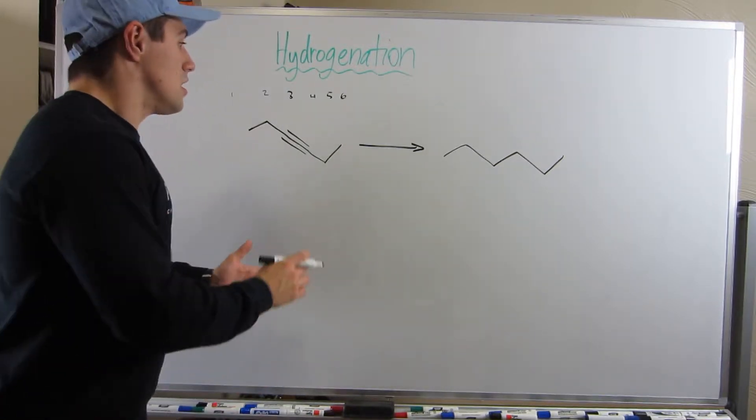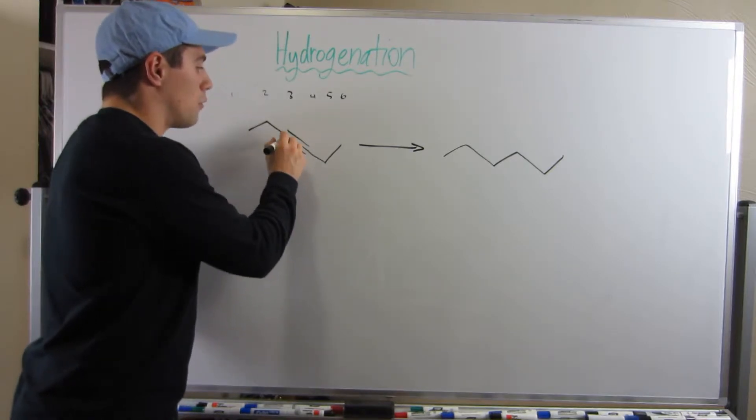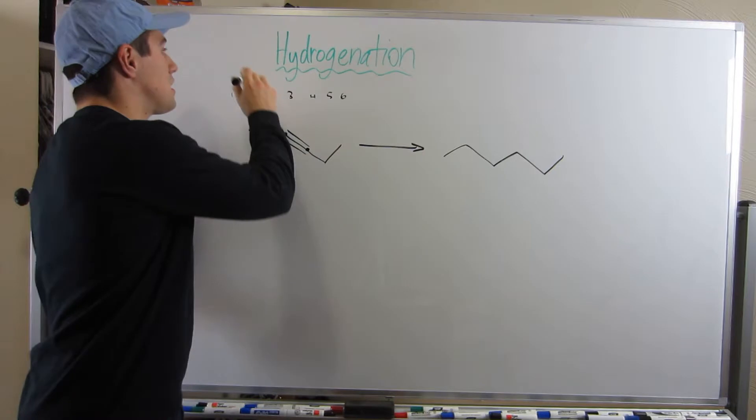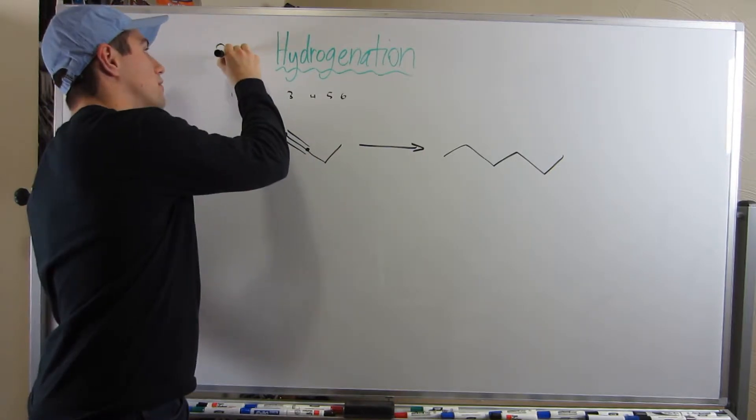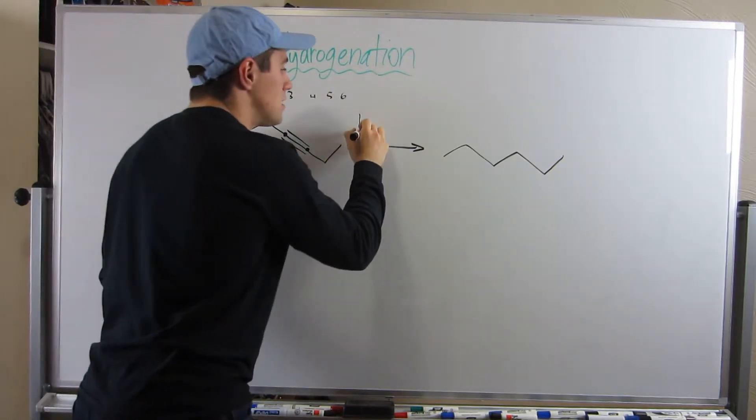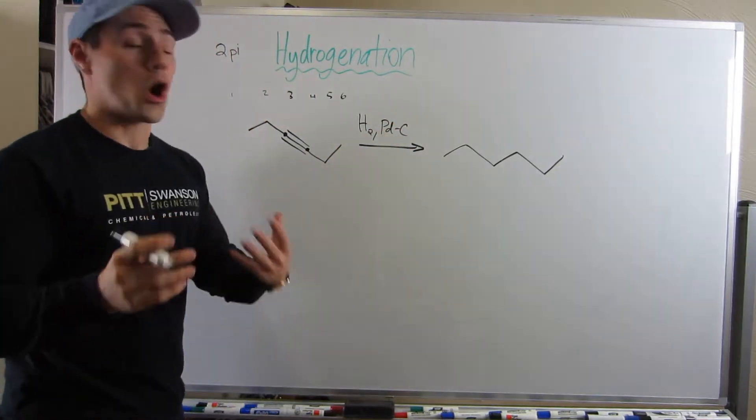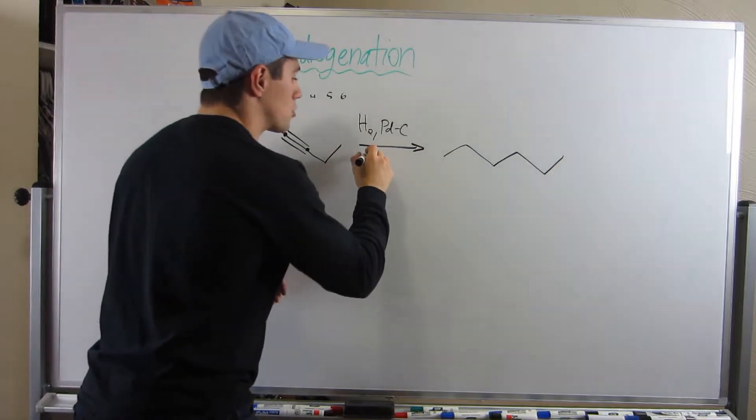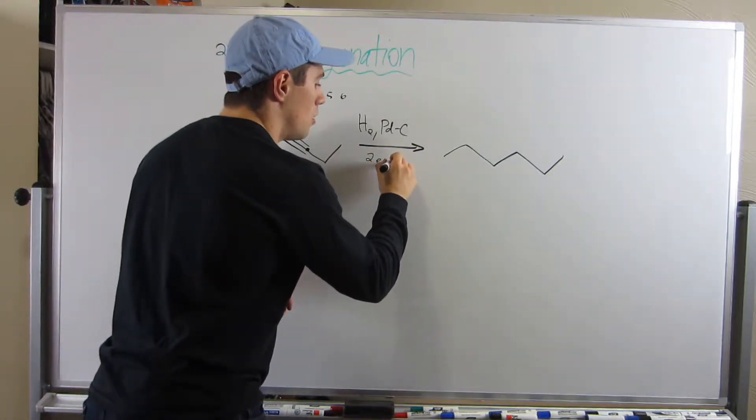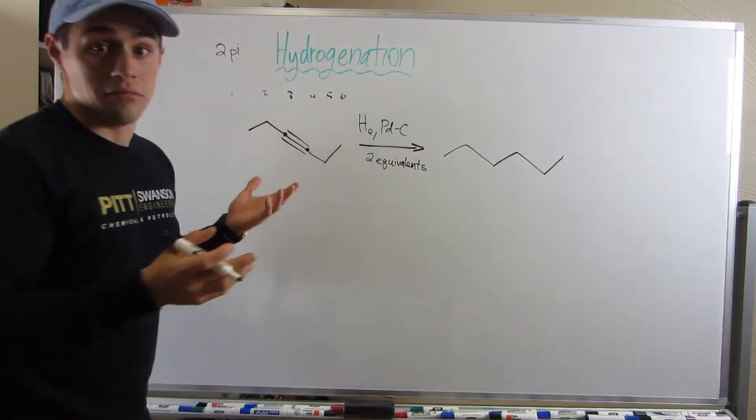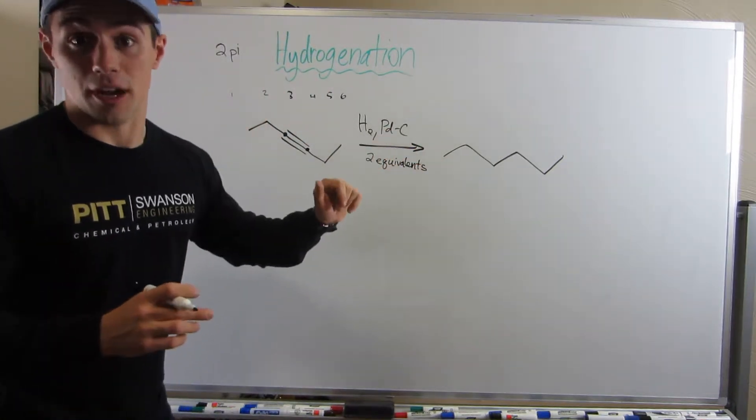If you think about it, we know there's one sigma bond between these two carbons. The only thing that's different is that instead of one pi bond, we have two. So we can still use H2 and Pd-C, hydrogen and palladium adsorbed carbon. However, we just need to make sure we have two equivalents, one for each pi bond. Done. You guys, this is old news.